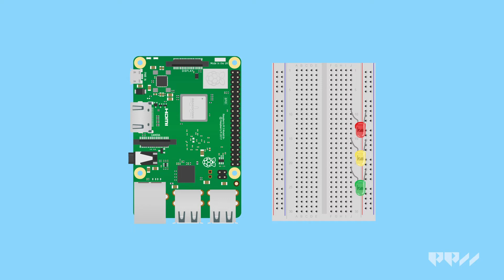We want the LEDs to resemble a traffic light. Place the long legs, positive, in the holes across the column and rail divider. Next, add a resistor from the positive leg across the center of the breadboard. For each LED, you will need a male-female jumper to connect them to the Raspberry Pi. For the green LED, connect the jumper to GPIO 7. For yellow, connect it to GPIO 8. And for red, connect it to GPIO 25. Next, add the buzzer so that one of the leads is in the positive rail and the other is across like the LED.